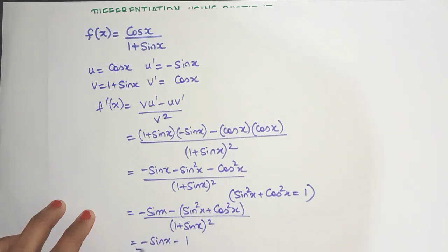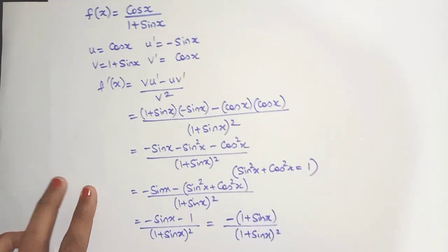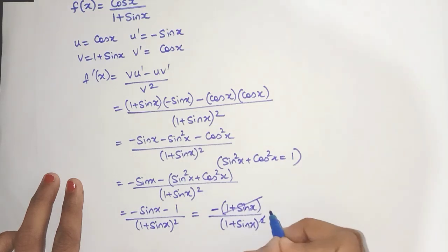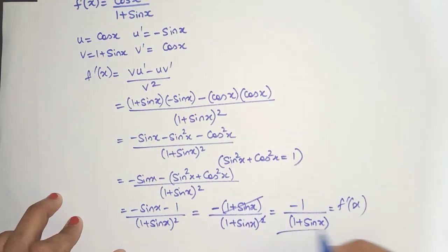Now I can write 1 here. Once again I can take the minus common. And yes 1 plus sin x is there in the numerator and denominator. So let's cut out 1 and then we'll get minus 1 upon 1 plus sin x. This is the derivative of f of x.